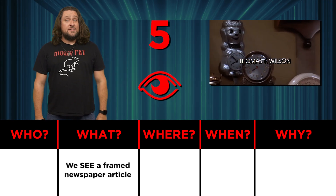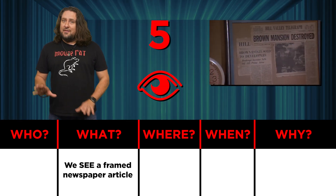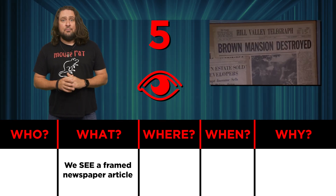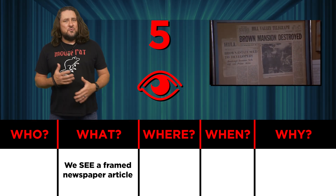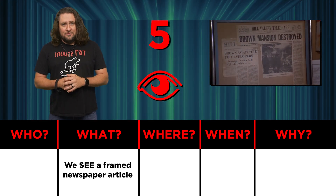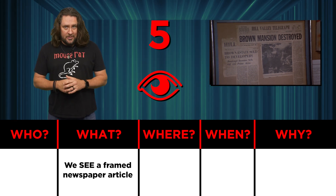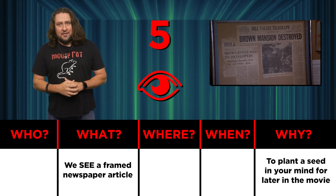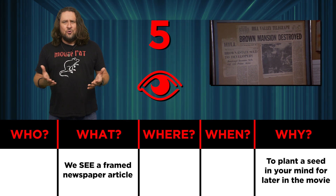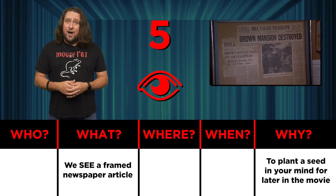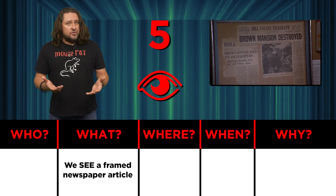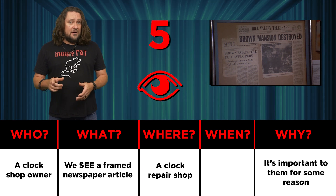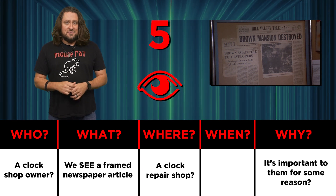Number five, we see a framed newspaper article. Notice how the camera stops moving and holds on it long enough to read the title of the article that says 'Brown Mansion Destroyed.' Most people might not retain that information because it's simply a random occurrence at this point, but its purpose is to plant a subconscious seed in your mind for later in the movie. This is the first time we might start thinking about who would want to frame this and hang it on their wall and why. I'll guess it's the clock shop owner who kept it because it's important to them — question mark.